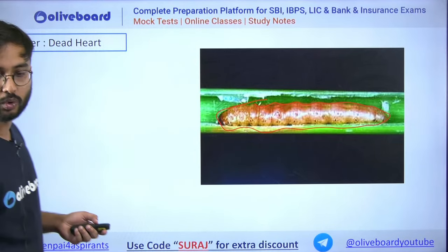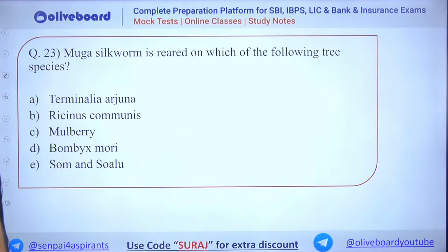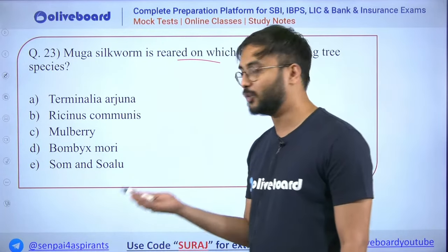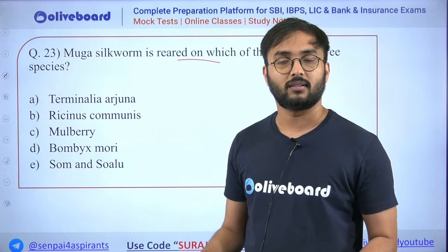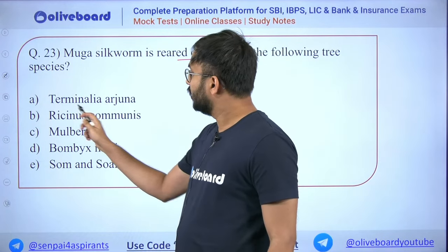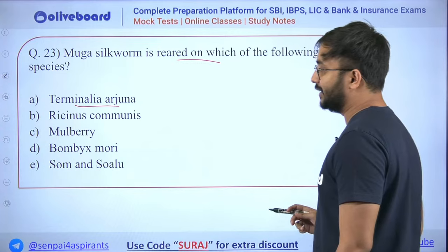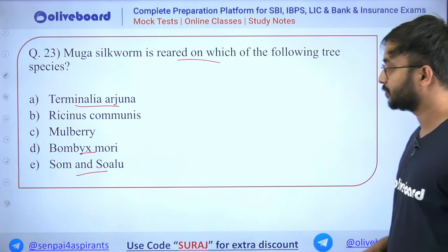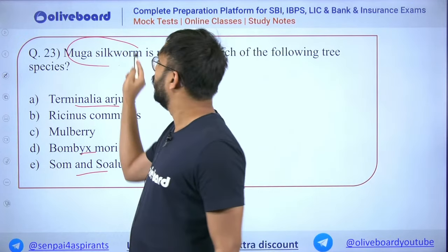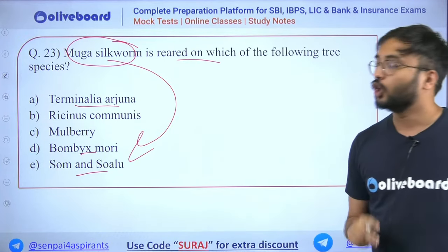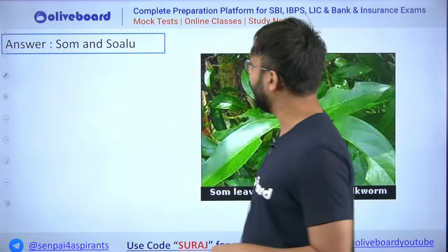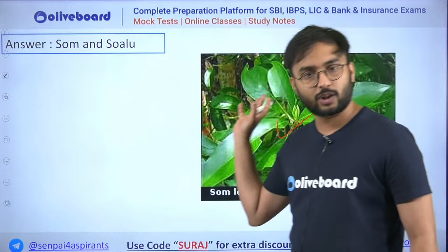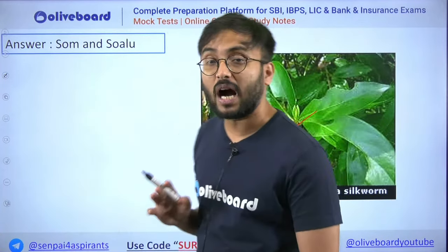Next: Muga silkworm is reared on which of the following trees? Options include Terminalia arjuna, Ricinus communis, mulberry, Bombyx mori, and Som/Alu. Muga silkworm is grown on Som and Alu leaves — these leaves feed the muga variety of silkworms.